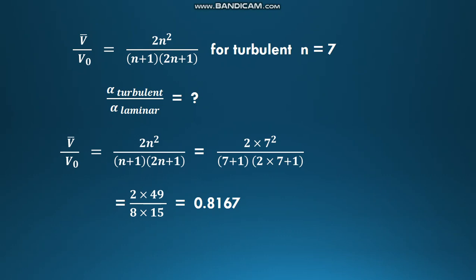2×49/(8×15), calculating that we get 0.8167 as V̄/V₀.